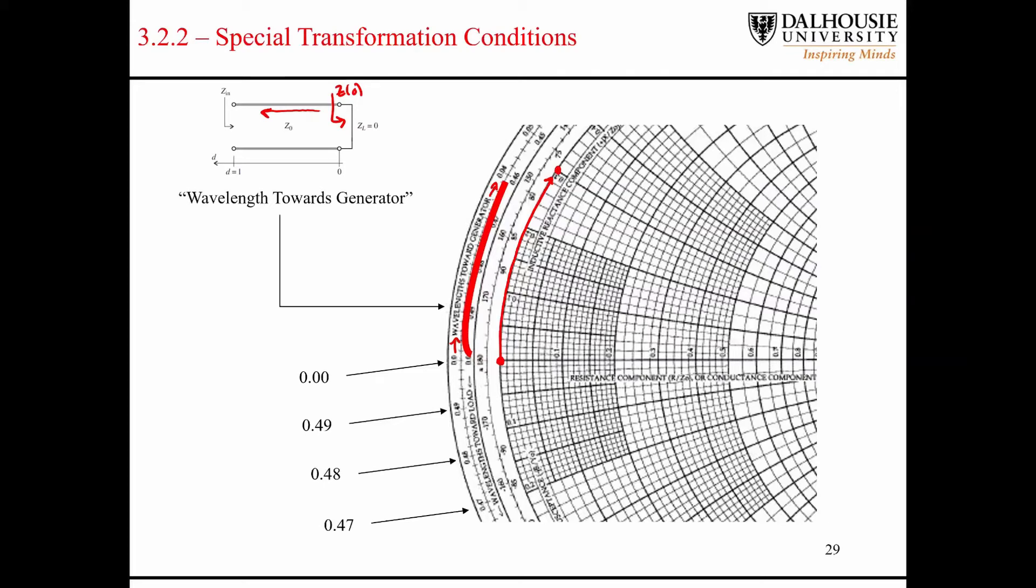So let's say we ended up at this point at Z_in at D equals L here. Well, that length would correspond to, here we have 0.00, and here we have 0.046 maybe, something like that. So this distance, this rotation here would correspond to 0.046 of a wavelength. You just take the point where you end up, and you subtract off the point where you started from.